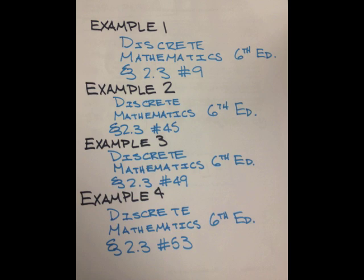The examples we'll be using are as follows. Example 1 is from Discrete Mathematics, 6th edition, section 2.3, number 9. Example 2 is the same edition and section, number 45. Example 3 is the same edition and section, number 49. Example 4 is everything the same except the number is 53.